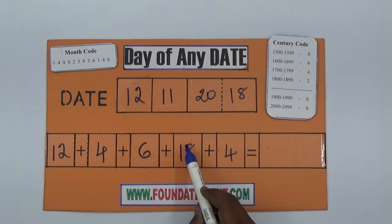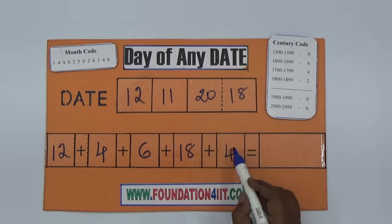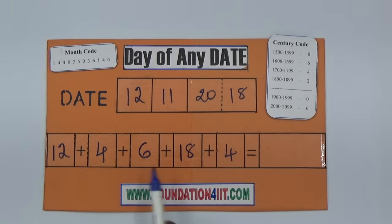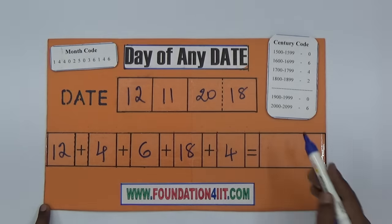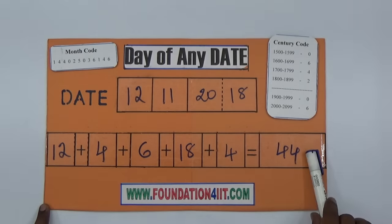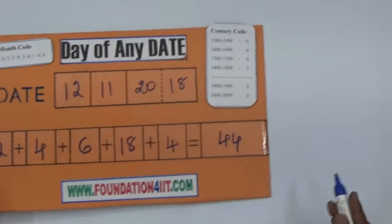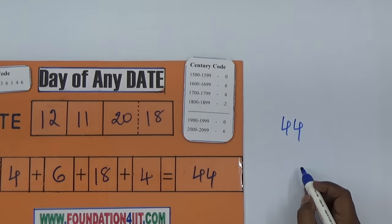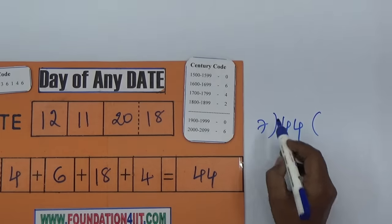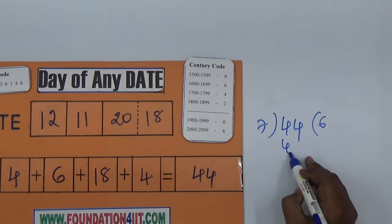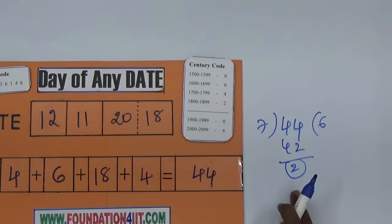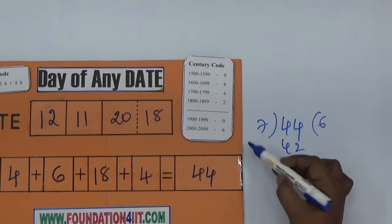Now these five numbers we add: 12 plus 4 plus 6 plus 18 plus 4. That is 10, 20, 30, 40, 44. Total is 44. Once you find this total, take this number and divide by 7. Because we have 7 days in a week. 7 times 6 is 42, remainder is 2. Generally the remainder will be from 0 to 6 only.